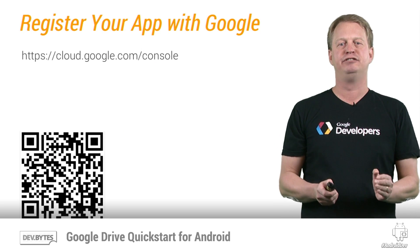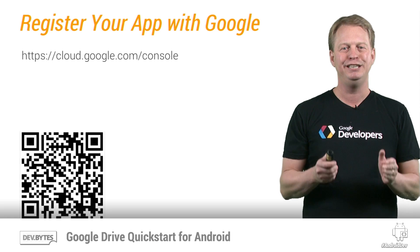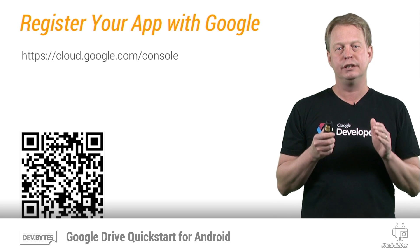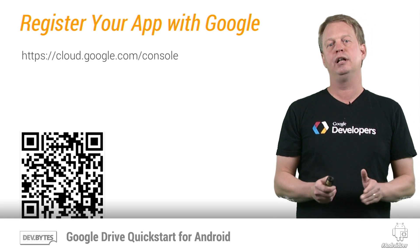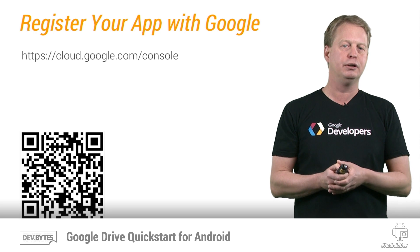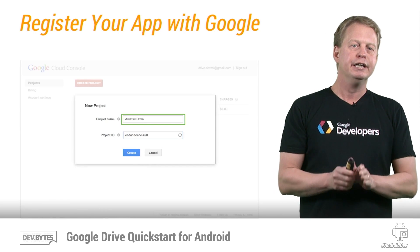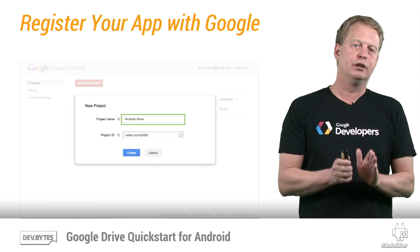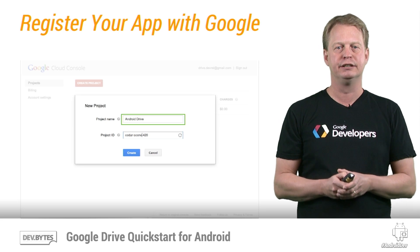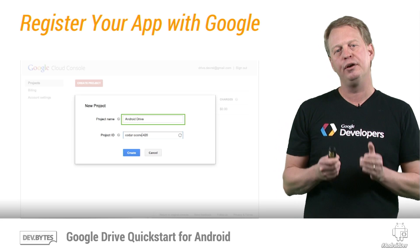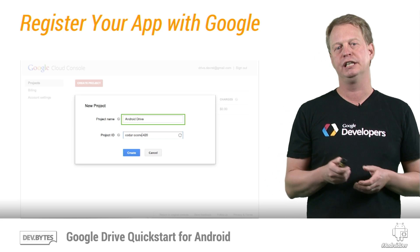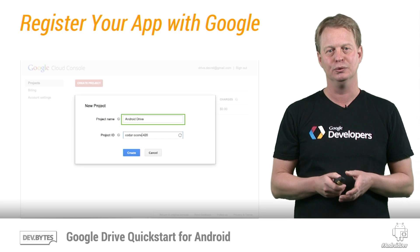Now that we have this value, we can proceed to register our app with Google. We use the Google Cloud Console to do so. The following link will bring you to the page where you can do this. In the Google Console, the first thing you want to do is to create a project. The only thing you really need to fill out is the project name you want to use.